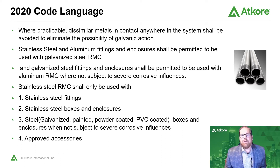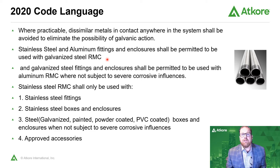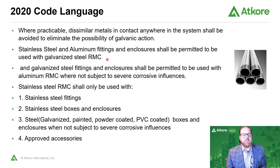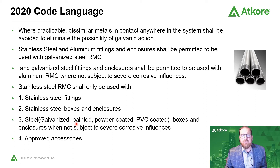Breaking down the 2020 code language: the second bullet says stainless steel and aluminum fittings and enclosures shall be permitted to be used with galvanized steel RMC. This puts in the missing piece from 2017 — you are allowed to use stainless steel fittings with galvanized rigid metal conduit, enabling that transition. So you can use stainless steel fittings with both stainless steel conduit and galvanized conduit. Additionally, stainless steel conduit can be used with any stainless steel fitting, any stainless steel box and enclosure, or a galvanized box or enclosure where not subject to severe corrosive influences.